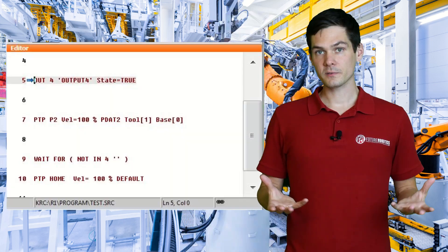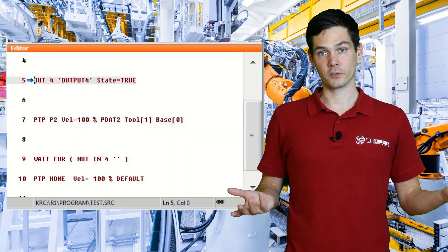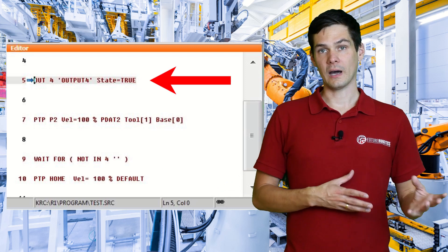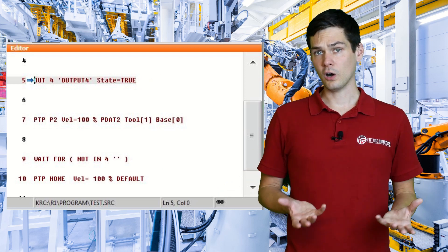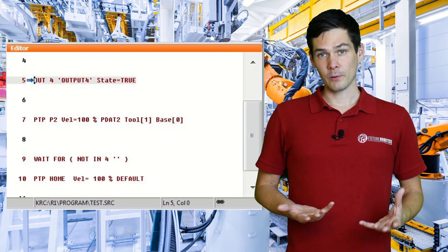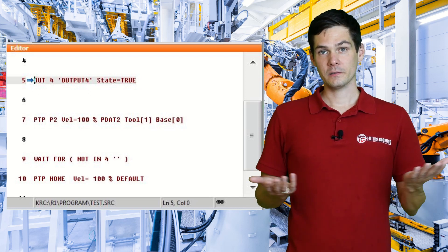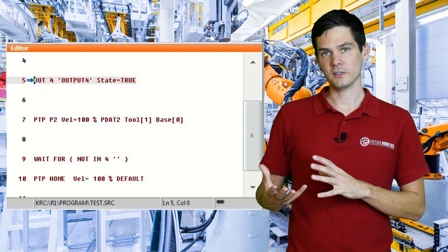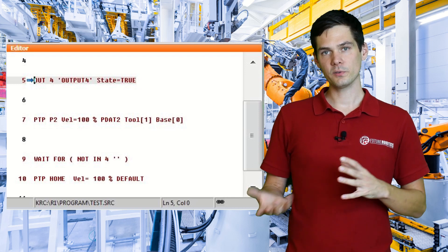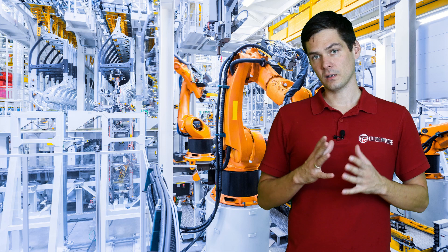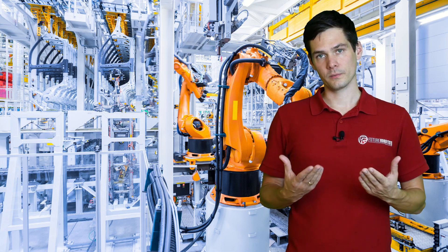Now what about the program? In programs you can also use inputs and outputs. You can wait for inputs, turn on outputs, turn off outputs, and so on. Today I'm going to show you just how to use those outputs and wait for inputs in the program. There is one main thing you need to know.